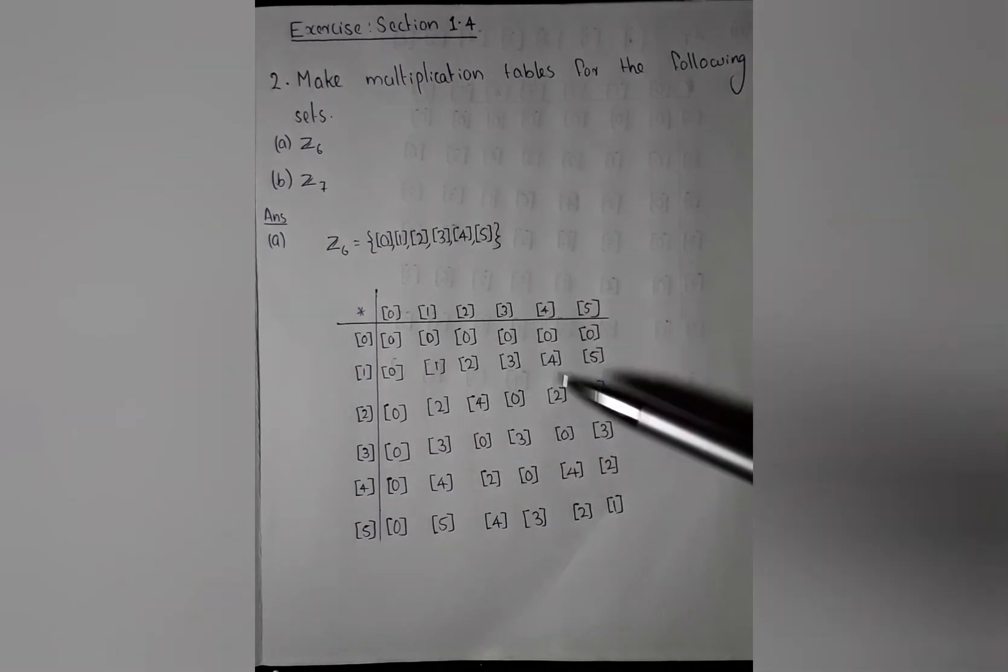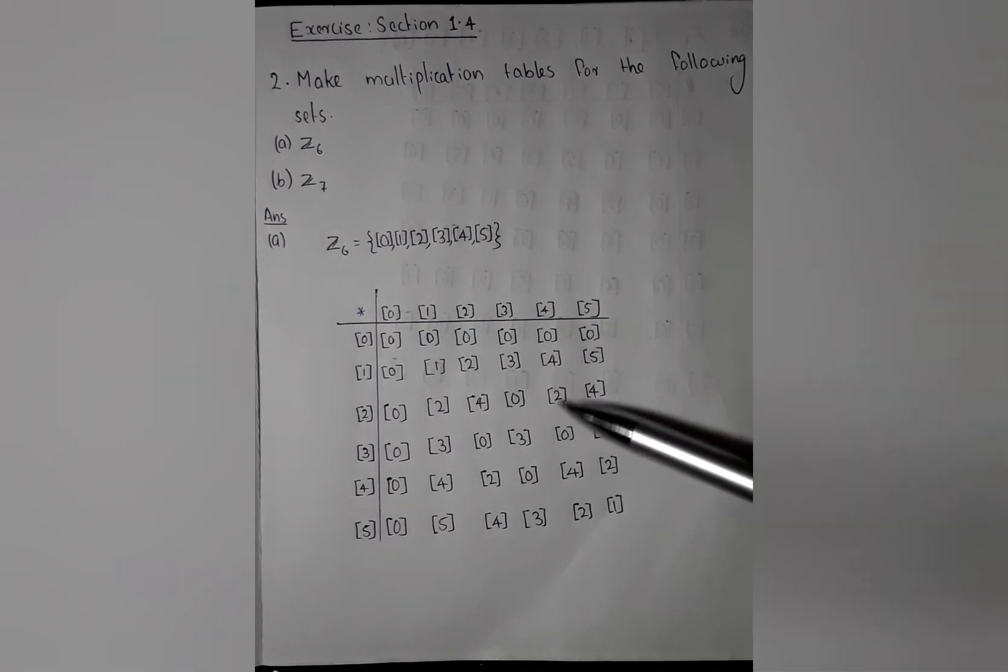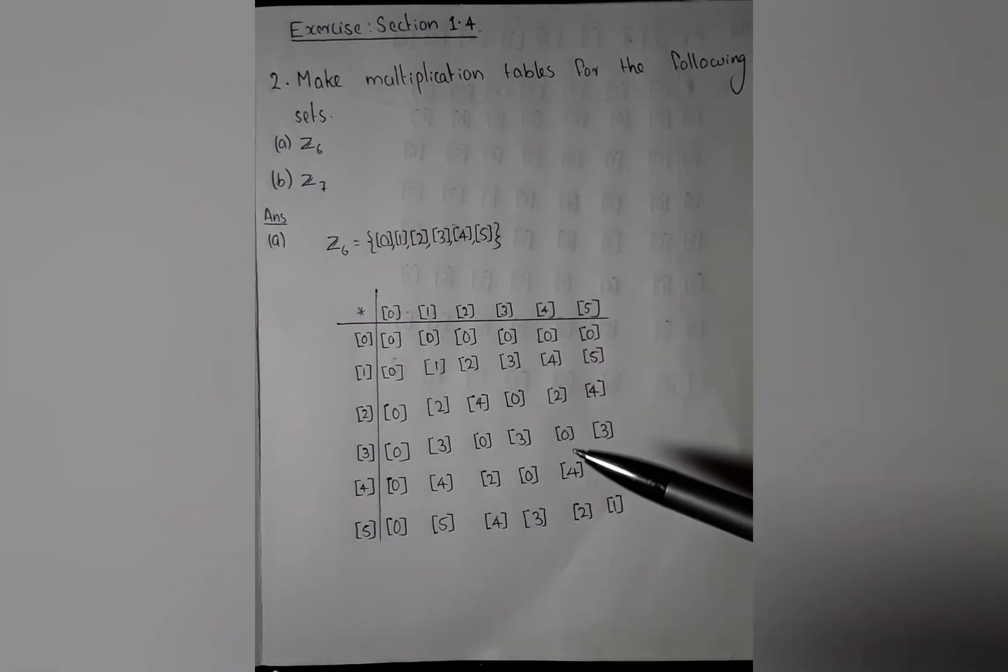Like that, 2.4 is 2. The actual value is 8. When divided by 6, we get the remainder 2. So we can write 2 modulo. Like this, we can complete the whole table.